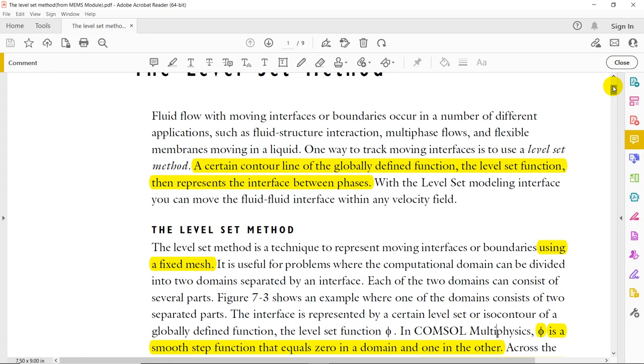One way to track moving interfaces is to use level set method. This is available in COMSOL and this is one of the ways by which you can track the interface. Interface means, suppose you have water and oil at the junction, you call it interface. A certain control line of the globally defined level set function then represents the interface between phases. So this level set function, which is denoted by phi, will actually be representative of your interface.